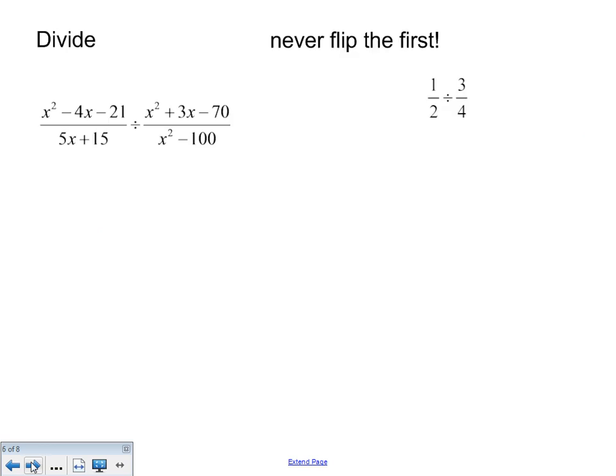Again, dividing fractions. The rule with dividing fractions. Dividing by a fraction is the same as multiplying by the second fraction reciprocal, 4 over 3. Never, never flip the first fraction. The first fraction always stays the same. 1 half in this simple example here. 1 half. Change your divide to times. Flip the 3 fourths. Now you can reduce. 2 goes into 4 twice, leaving me with 2 thirds. All right, let's try that with this one.